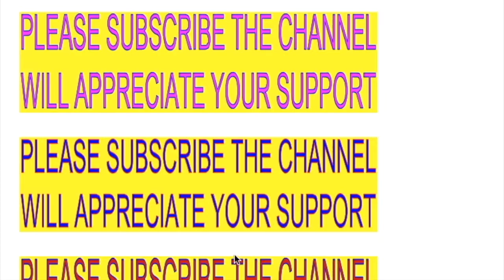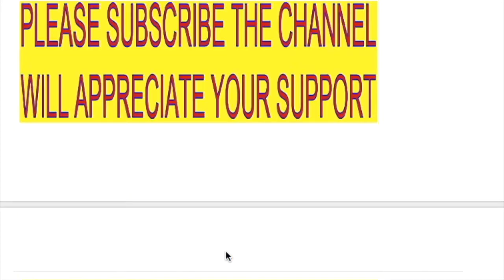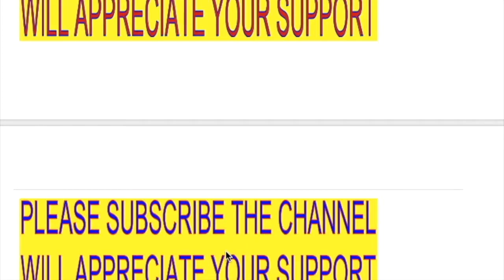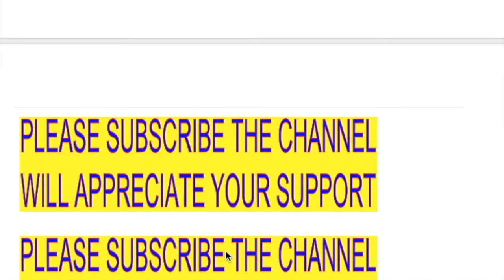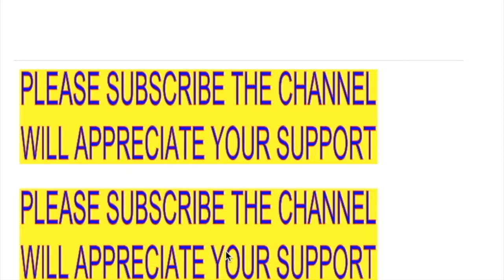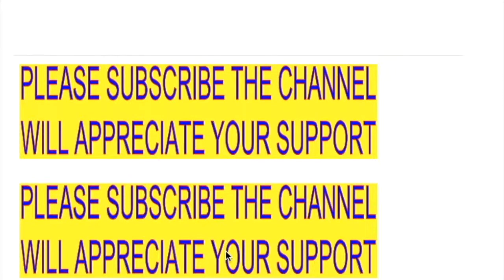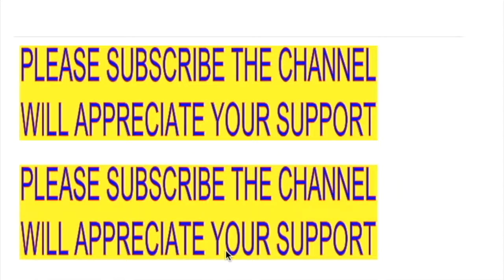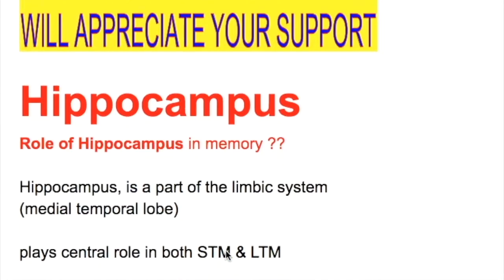In this video, we'll discuss the hippocampus and its function in memory formation and the different types of cells involved in memory formation. Hippocampus is a part of the limbic system situated in the medial temporal lobe, and it plays an important role in both short-term and long-term memories.